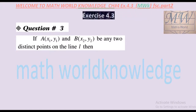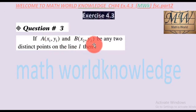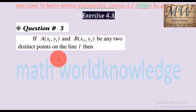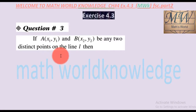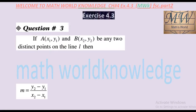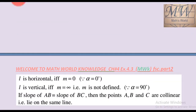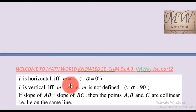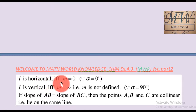For slope, it is necessary to have two points. If A(x1, y1) and B(x2, y2) be any two distinct points on the line, then we can find the slope of that line.